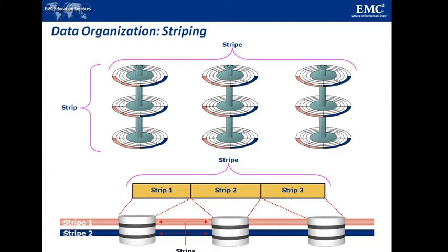In the figure you can see spindles, stripe, and strip. A strip is a number of contiguously addressable disk blocks. A stripe is spread over multiple disks within the RAID. There are 3 disks arranged, and the stripe covers all 3 disk sets. The darker shade represents stripe 1 and the lighter shade represents stripe 2.